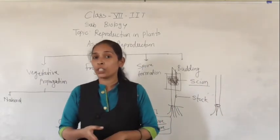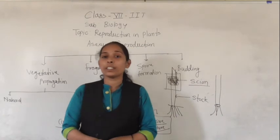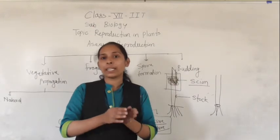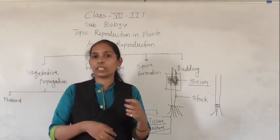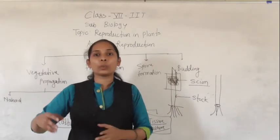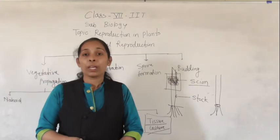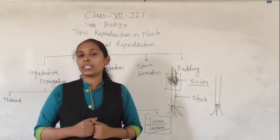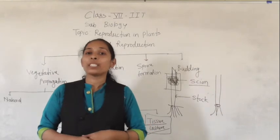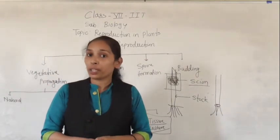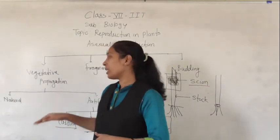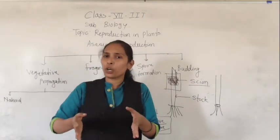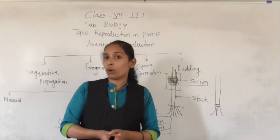The disadvantages of vegetative propagation: the first is that whatever diseases are present in the plant can be transferred to the offspring as well. The diseases of the parent plant can be transferred to the new offspring. Next, we cannot store vegetative parts like seeds. Also, vegetatively propagated plants are unable to adapt themselves according to their surroundings. Finally, with vegetative propagation we can grow a number of plants within a short area, causing overcrowding of plants.